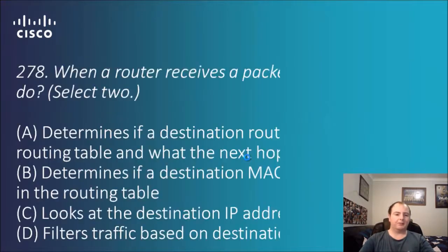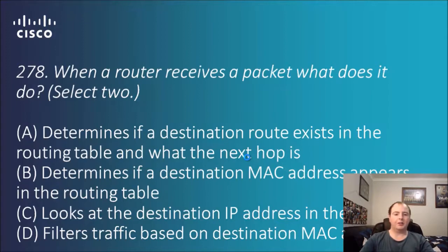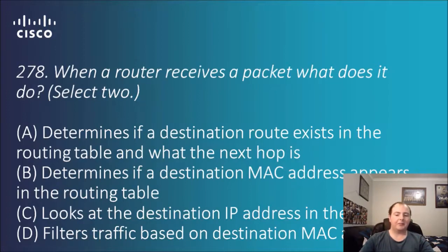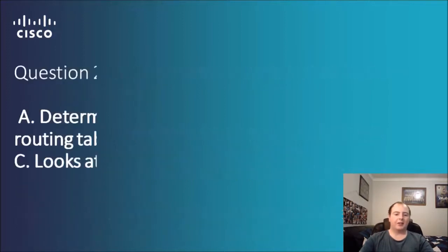Question 278: when a router receives a packet, what does it do — select two. We're just eliminating what's wrong. Options: determines if a destination route exists in a routing table and what the next hop is; determines if a destination MAC address appears in the routing table; looks at the destination IP address in the packet; filters traffic based on destination MAC address. The router's main job is to direct traffic, so the answers are A and C: determines the destination route exists in the routing table and what the next hop is, and looks at the destination IP address in the packet.